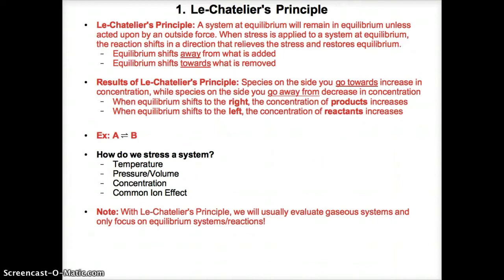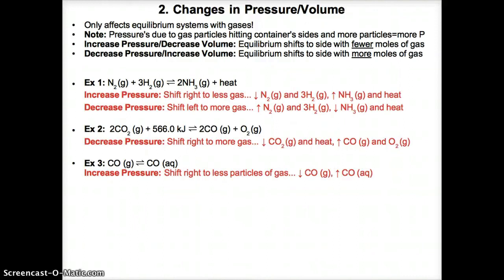Pressure or volume only affect equilibrium systems with gases, since gases are the most compressible state. Gas pressure results from gas particles hitting the container sides, so more particles lead to greater pressure. If you increase pressure or decrease volume, the pressure is too high — essentially too many particles — so equilibrium shifts towards the side with fewer moles of gas, away from the side with more particles, to bring pressure down.